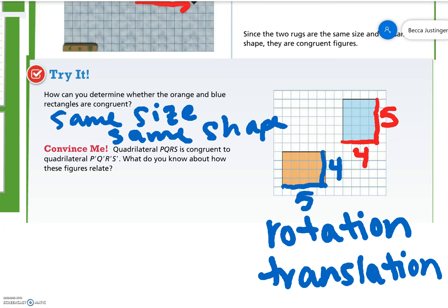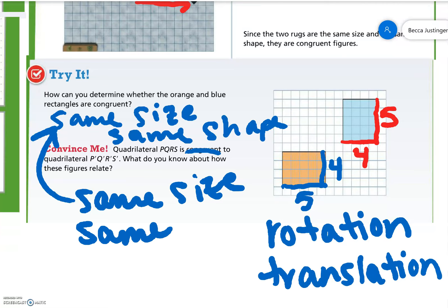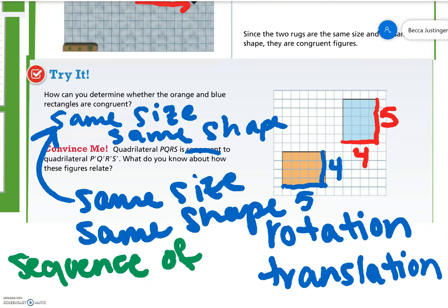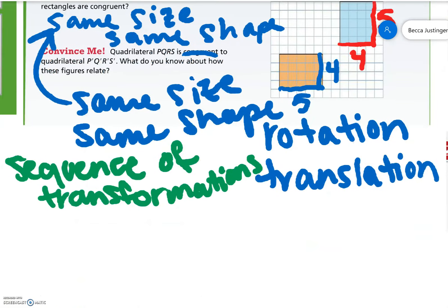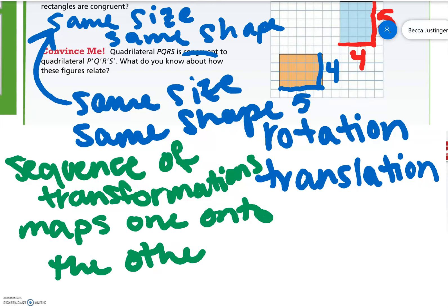Quadrilateral PQRS is congruent to quadrilateral P'Q'R'S'. What do you know about how these figures relate? I know since they're congruent, again, they have the same size and the same shape and a sequence. Remember, sequence was more than one. A sequence of transformations maps one onto the other. So you'll be able to move one of the quadrilateral PQRS in some way with a form of rotation, reflection, and translation in order to lay right on top of P'Q'R'S'.